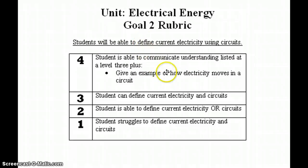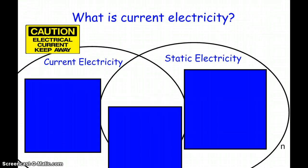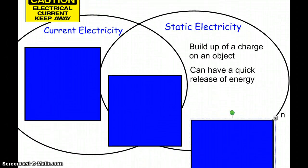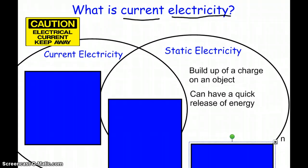In this goal, students are able to define current electricity using circuits. First we have to know what is current electricity. Current electricity is going to be one of the vocabulary words in this goal. We know what static electricity is. We know that it is a buildup of a charge on an object and can have a quick release of energy, like when you get shocked. That word static tells us it's not really moving, it's not continuously moving, it's mostly static, hence the word.